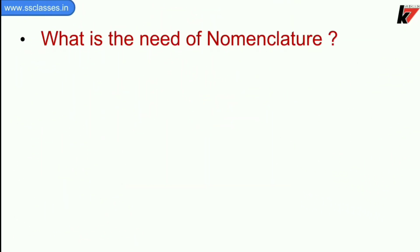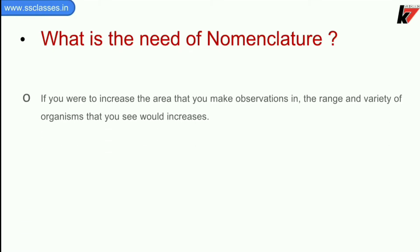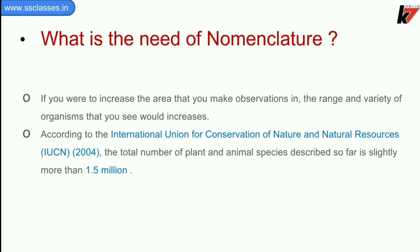Now we will see what is the need of nomenclature. If you were to increase the area that you make observations in, the range and variety of organisms that you see would increase. According to the International Union for Conservation of Nature and Natural Resources, IUCN, the total number of plants and animal species described so far is slightly more than 1.5 million.